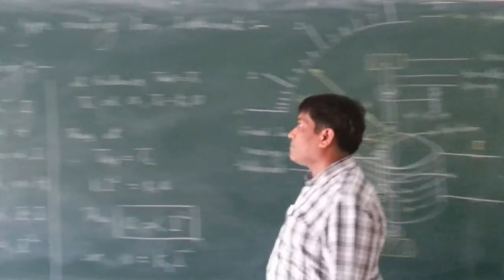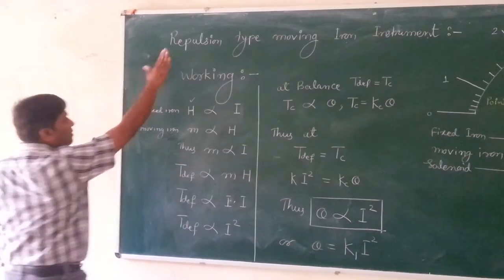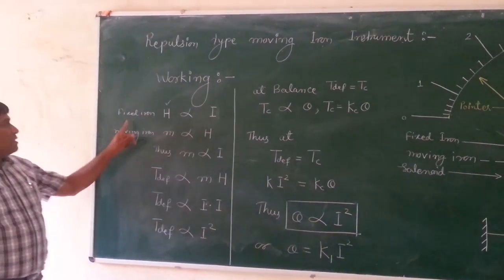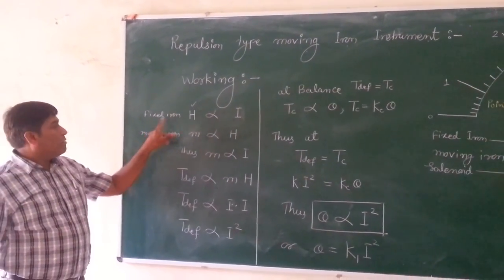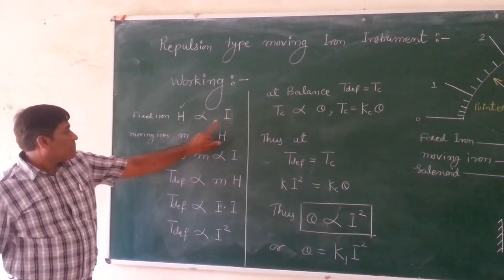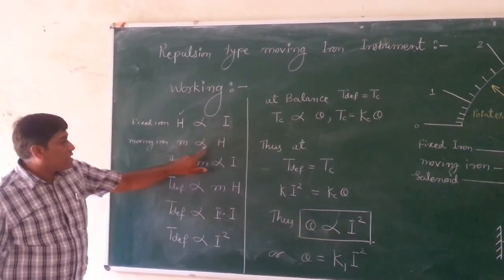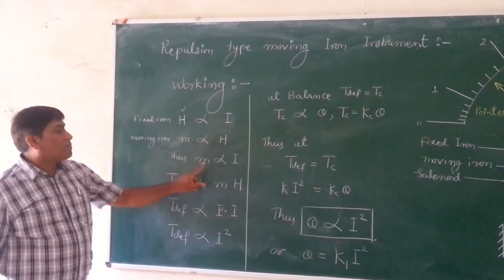Now, coming to the mathematical portion. If you see this working, this is the H generated in the fixed iron, proportional to the current, which is ultimately proportional to the voltage applied. Now, in the moving iron also, the magnetic field strength is proportional to H as well as it is proportional to the I.